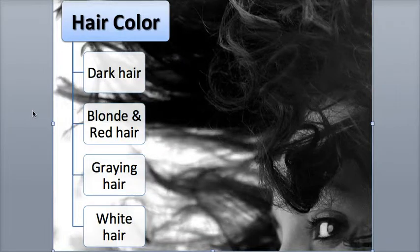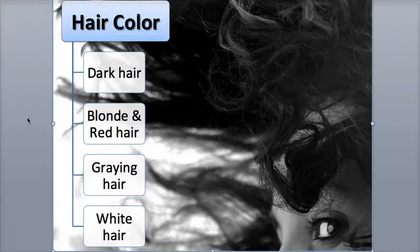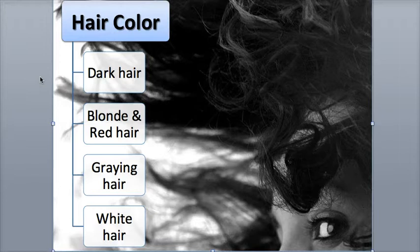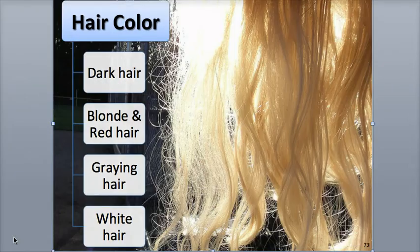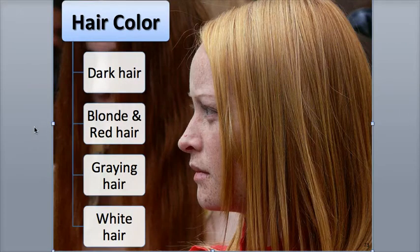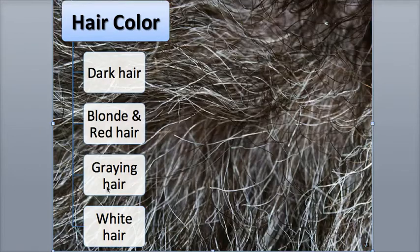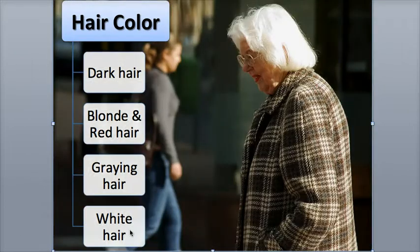Hair color is influenced by the type and quantity of melanin within its cells. The melanocytes in the matrix secrete melanin into the cells of the hair's cortex and medulla. Dark hair contains rich concentrations of a form of melanin called eumelanin, while blonde hair and red hair contain another type called pheomelanin. Hair turns gray as melanin production slows down as we age, and white hair is the result of air bubbles that build up in the shaft as melanin production stops.